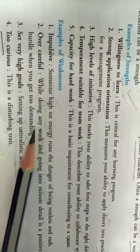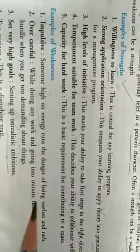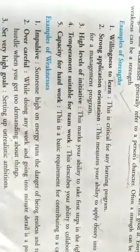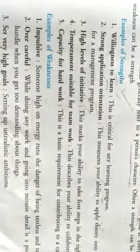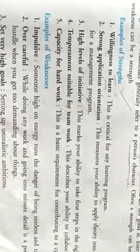Now, what are the examples of weakness? These include: impulsive, over-careful, setting very high goals, and being too curious. Impulsive means when someone is high on energy, they run the danger of being restless. When you are in a high-energy state, you may become angry or restless.